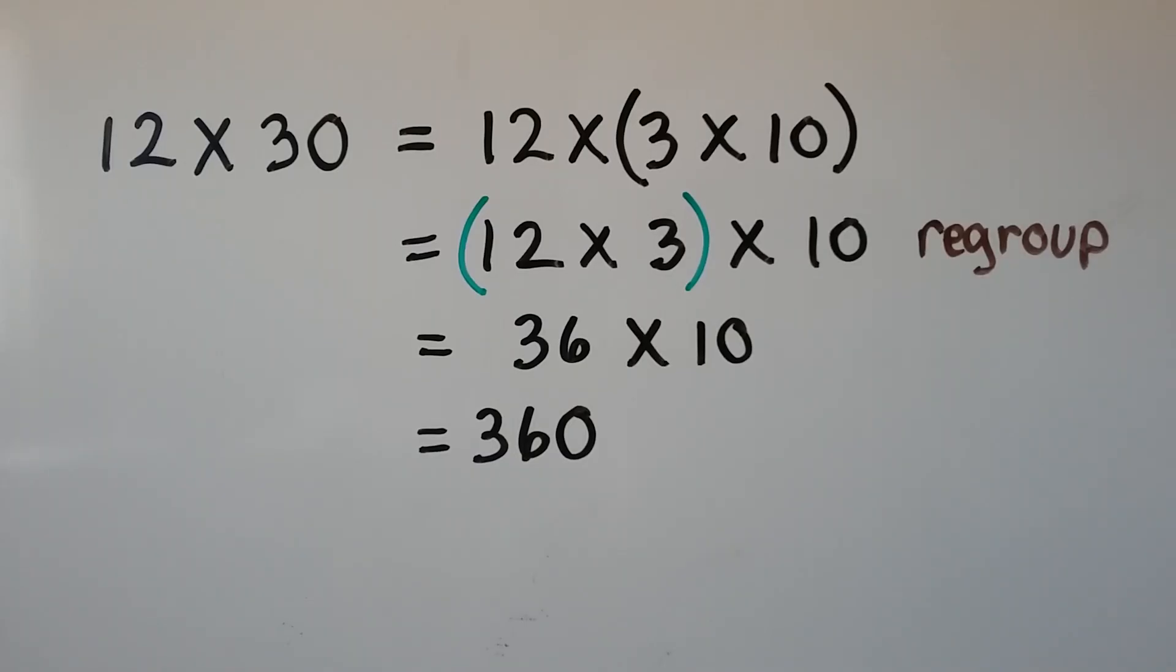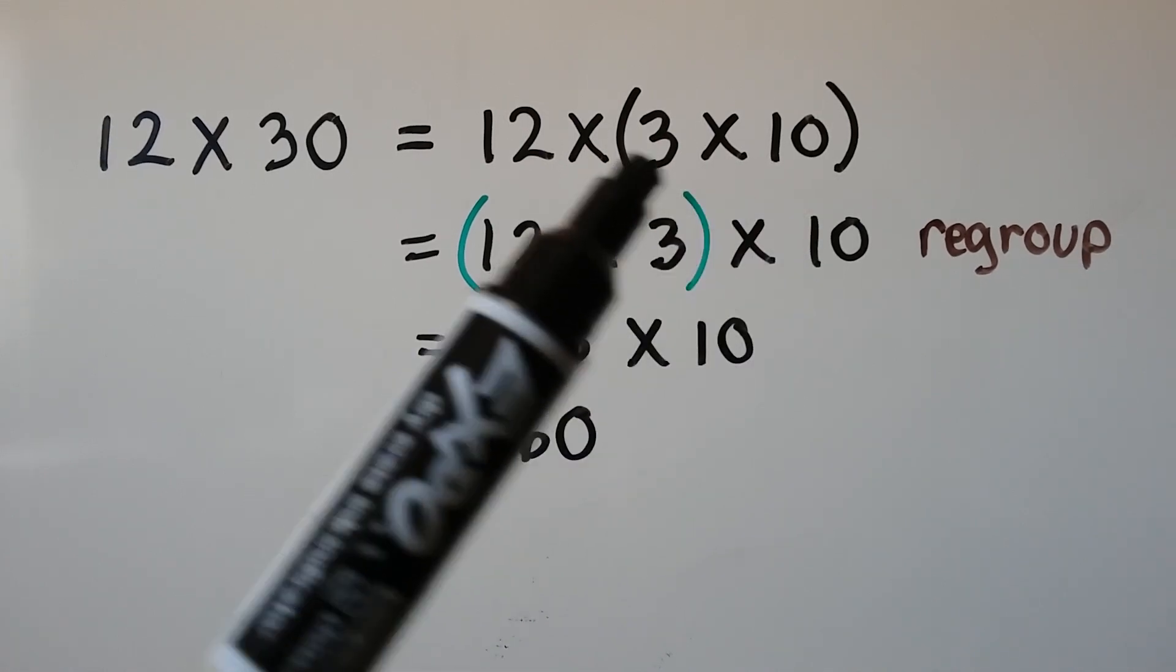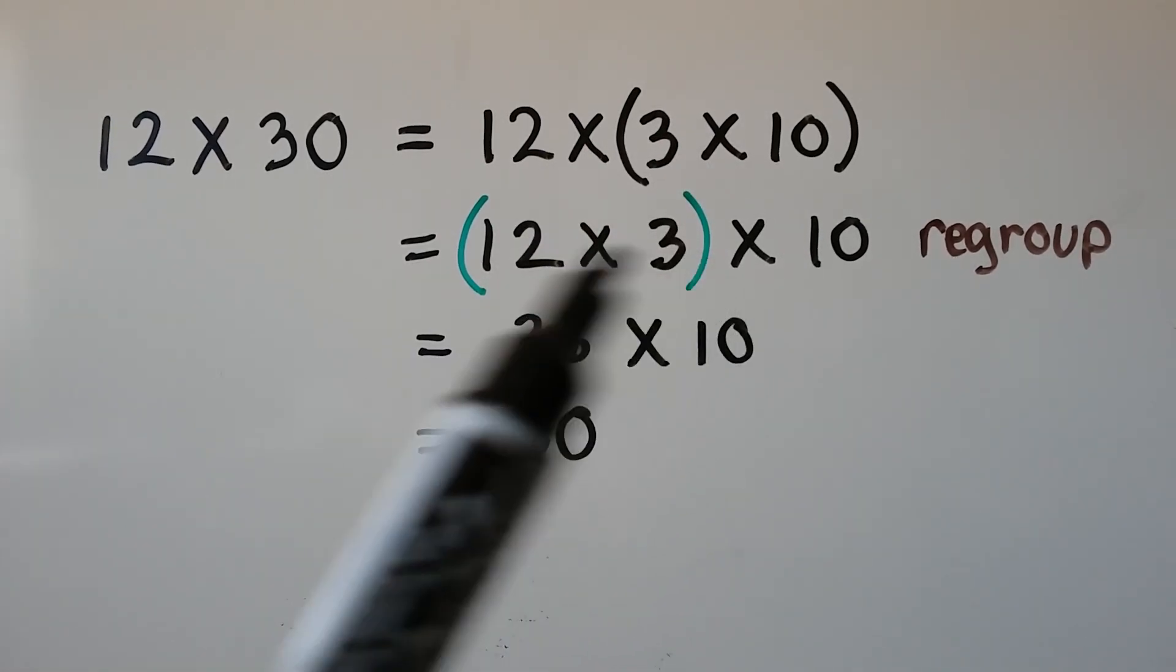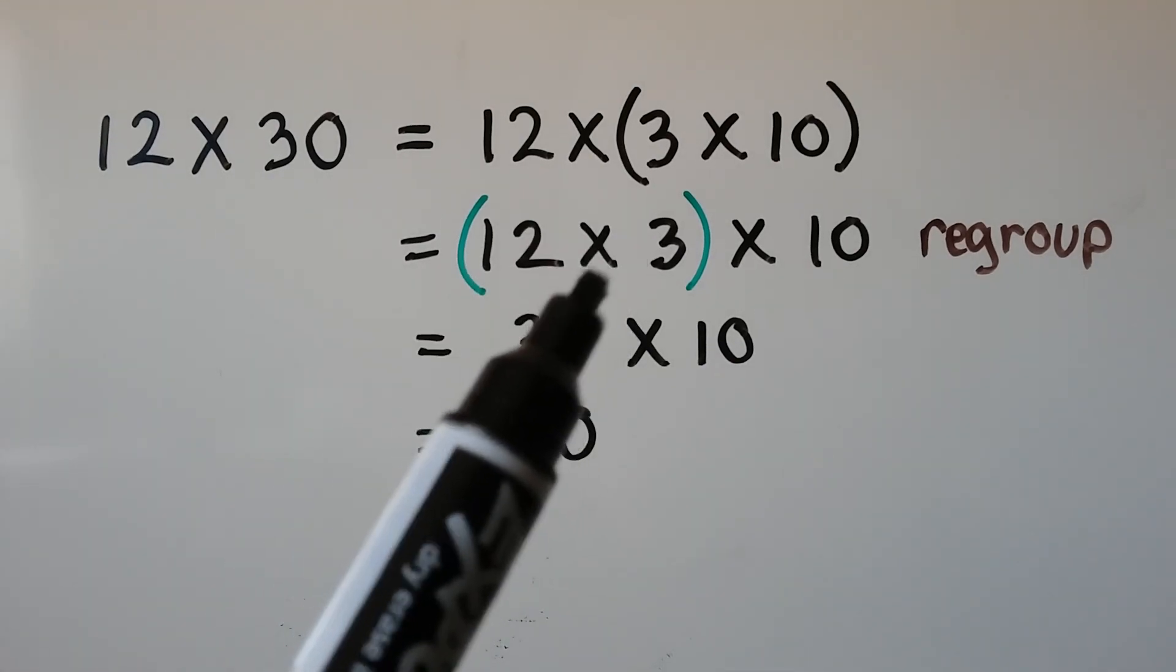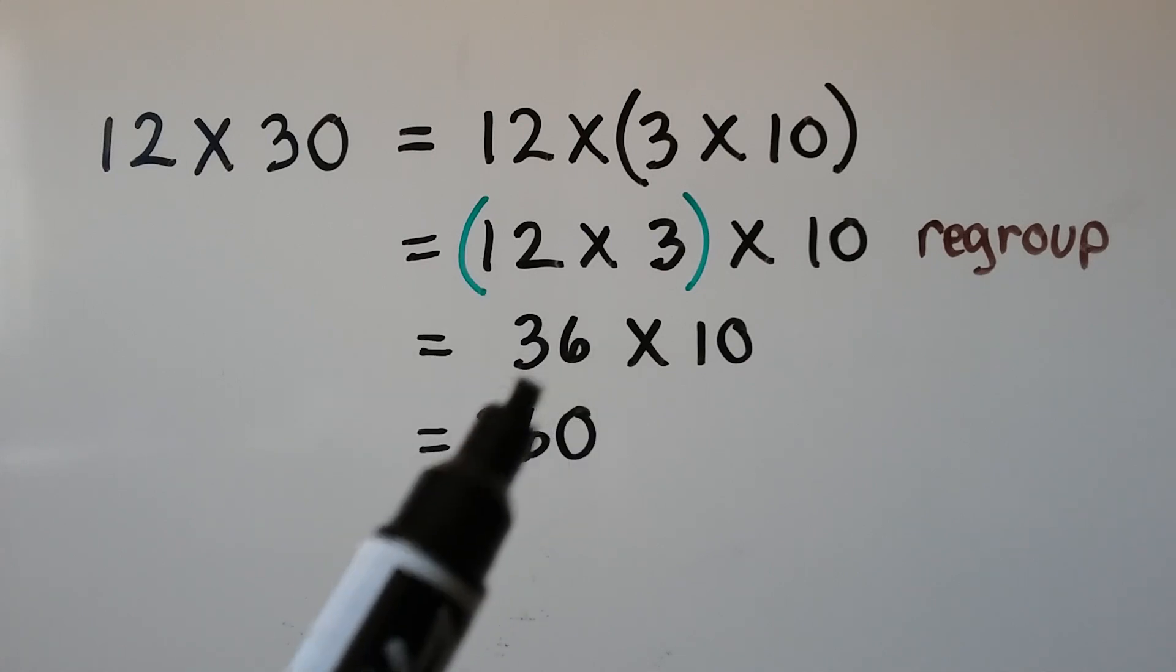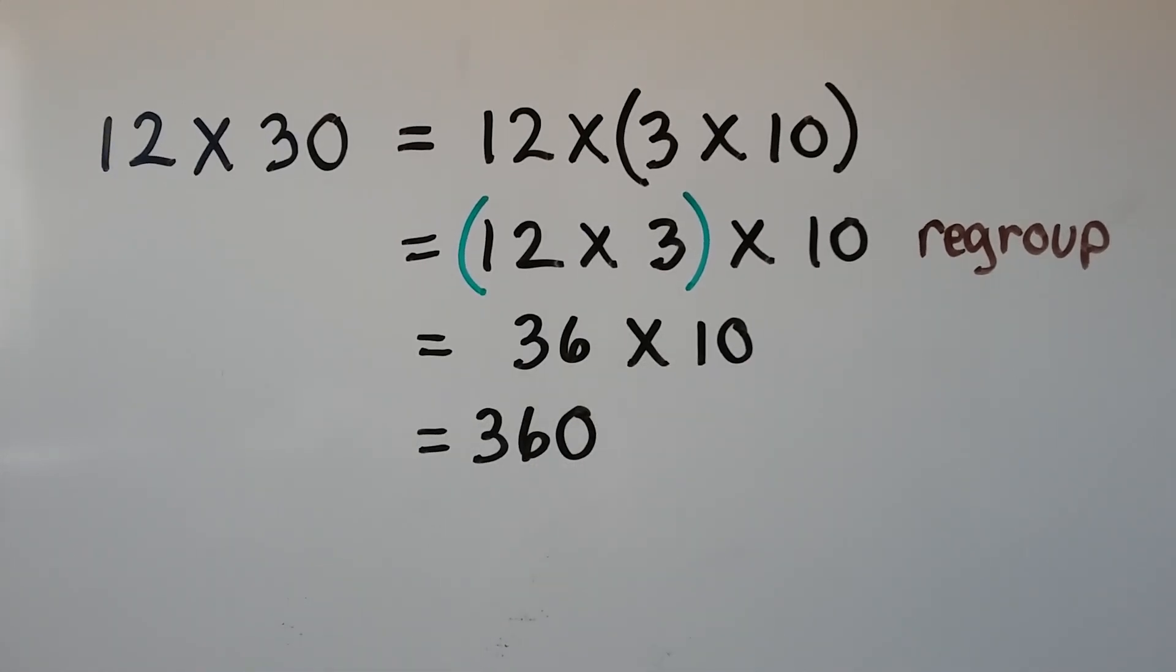And using the associative property again, for 12 times 30, we could say that's 12 times 3 times 10. 3 times 10 is 30. We regroup and put the 12 times 3 in the parentheses, and then multiply it by 10. 12 times 3 is 36. We multiply that by 10, and it's equal to 360.